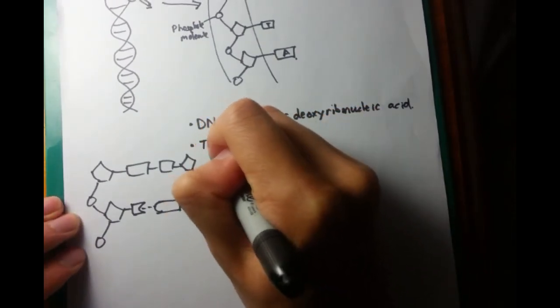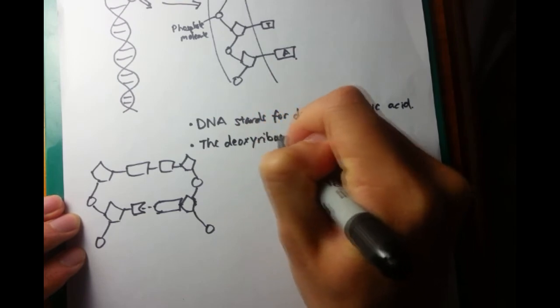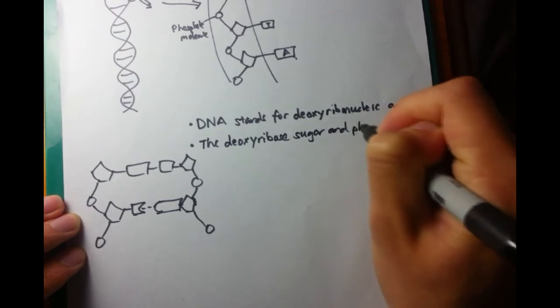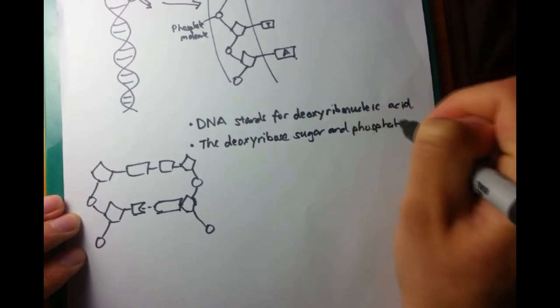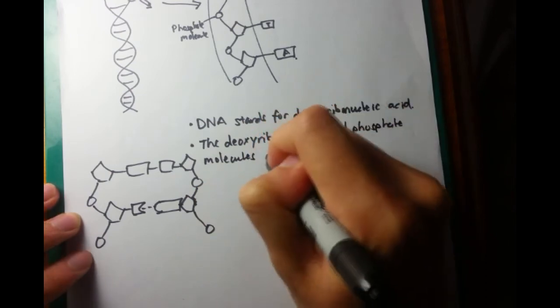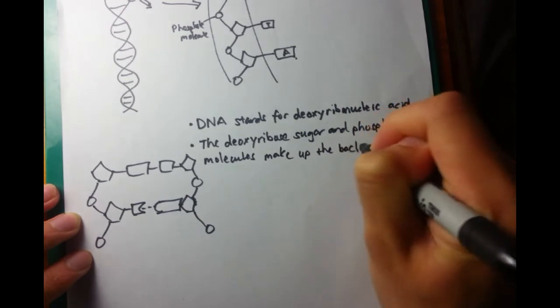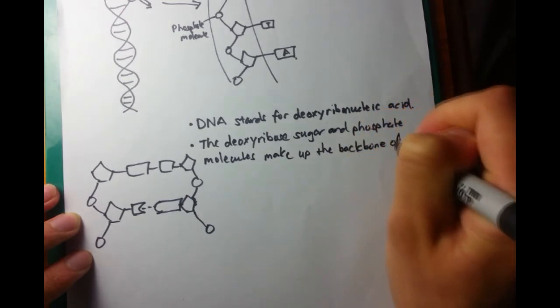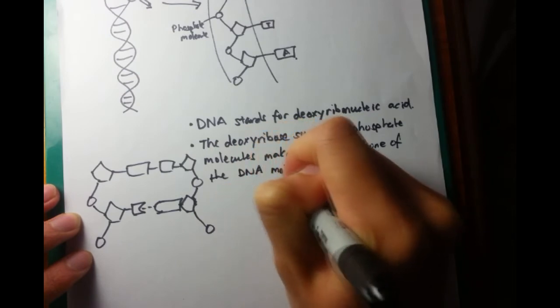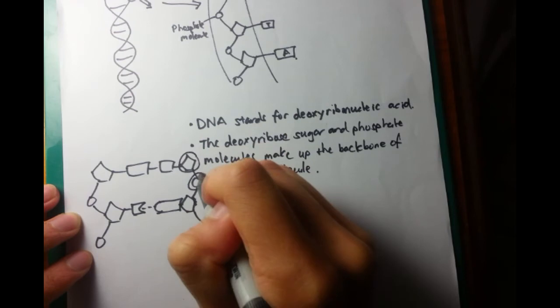So the deoxyribose sugar and phosphate molecules make up the backbone of the DNA molecule. So that's this one and this one.